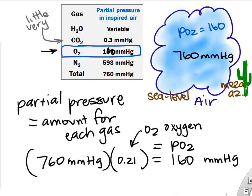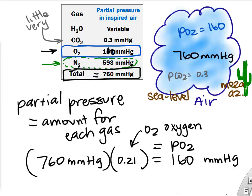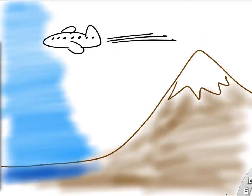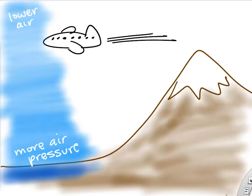There's very little CO2 — the partial pressure for CO2 in the air we breathe is only about 0.3. Most of the air pressure is due to nitrogen gas. The lower you are in altitude and the closer you are to sea level, the more air pressure there is. The higher you are in the atmosphere, the less air pressure there is. At sea level, atmospheric pressure is about 760.